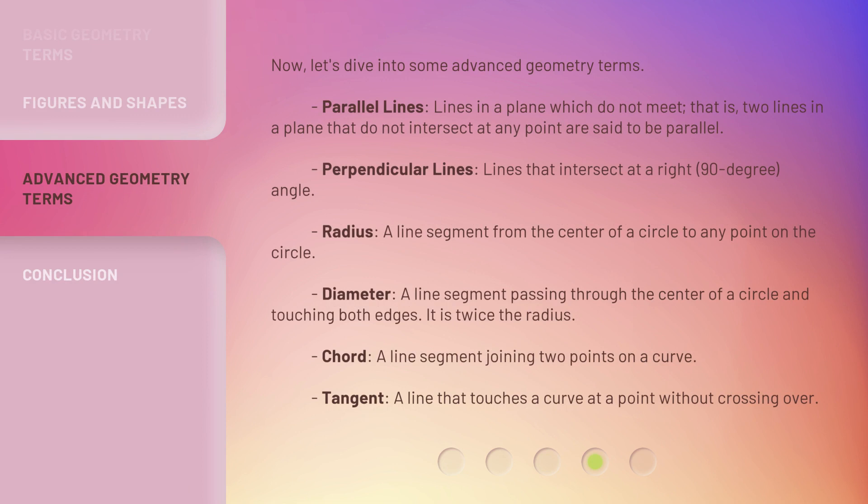Parallel lines: Lines in a plane which do not meet. That is, two lines in a plane that do not intersect at any point are said to be parallel. Perpendicular lines: Lines that intersect at a right, 90 degree, angle.